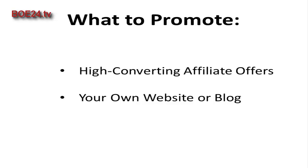I suggest finding high-converting affiliate offers. What this means is finding products or services that other people are already offering, and you get a link from them, put it in your email, and send it out to your list. If anyone clicks on that link and goes to that other person's website and makes a purchase, you get a percentage of that sale. Depending on the offer, you could get 50%, 90%, even 100% of that, and it could even be up in the hundreds or thousands of dollars depending on what it is that you're promoting.